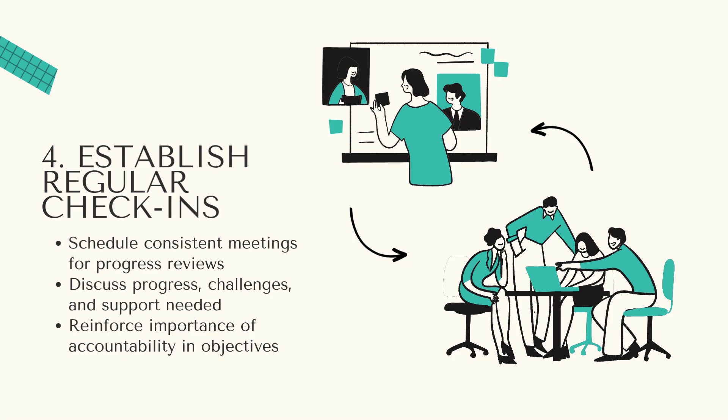The next step is to establish regular check-ins. Regular check-ins and progress reviews are vital for maintaining accountability. Schedule consistent meetings where team members can discuss their progress, challenges and any support they might need from you. These check-ins provide an opportunity to offer feedback, celebrate achievements and address any issues early on. They also help reinforce the importance of accountability in meeting team objectives.